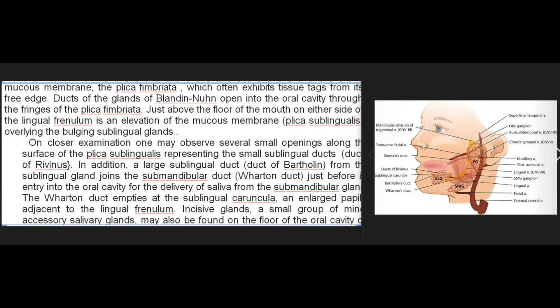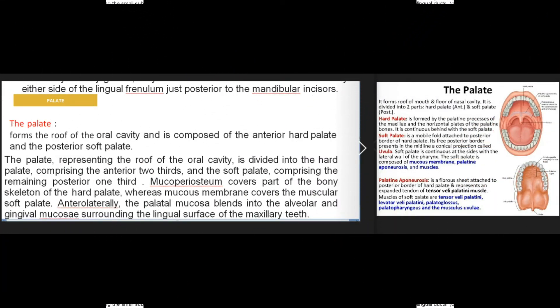Incisive glands, a small group of minor accessory salivary glands, may also be found on the floor of the oral cavity on either side of the lingual frenulum just posterior to the mandibular incisors. The palate forms the roof of the oral cavity and is composed of the anterior hard palate and the posterior soft palate. It is divided into the hard palate comprising the anterior two-thirds and the soft palate comprising the remaining posterior one-third.